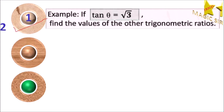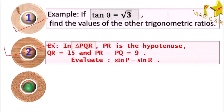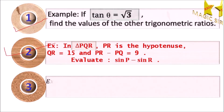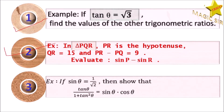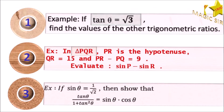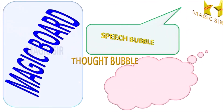Now the second example: in triangle PQR, PR is the hypotenuse, QR equal to 15, and PR minus PQ equal to 9. Evaluate sin P minus sin R. We will solve this by using the algebraic formula and the elimination method. And the third: if sin theta equal to 1 upon root 2, then show that tan theta upon 1 plus tan square theta is equal to sin theta into cos theta. We will indirectly check the formula of sin 2 theta equal to 2 tan theta upon 1 plus tan square theta.